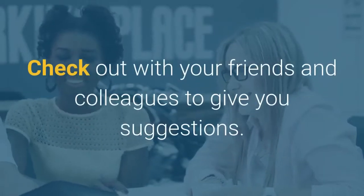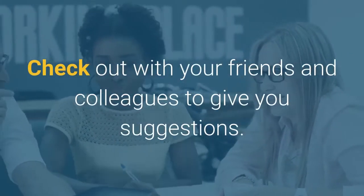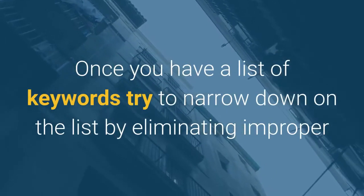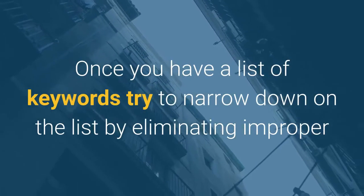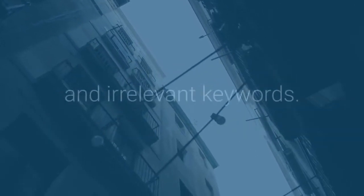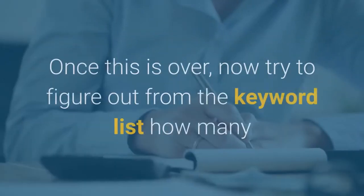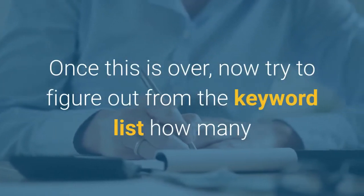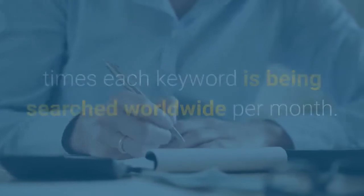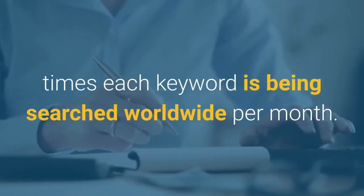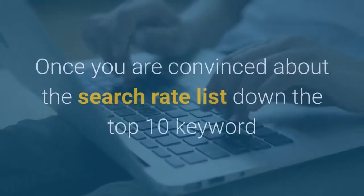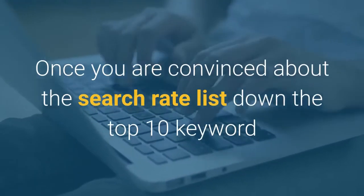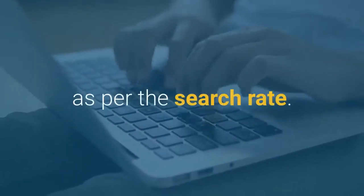Check out with your friends and colleagues to give you suggestions. Once you have a list of keywords, try to narrow down the list by eliminating improper and irrelevant keywords. Once this is over, try to figure out from the keyword list how many times each keyword is being searched worldwide per month. Once you are convinced about the search rate, list down the top 10 keywords as per the search rate.